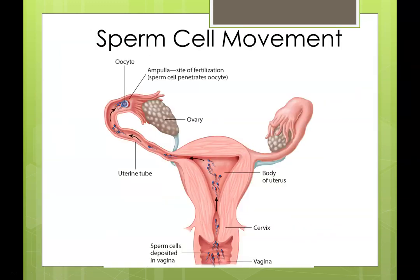Quickly, the movement of the sperm cell through the female reproductive system: sperm gets ejaculated into the vagina, moves through the cervix and into the uterus, then through the fallopian tube. Peristalsis helps move the sperm over to the ampulla, which is the most common site of fertilization.